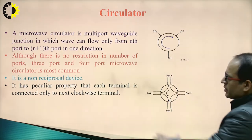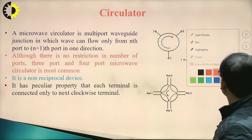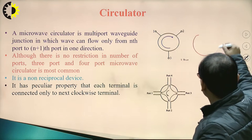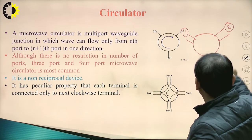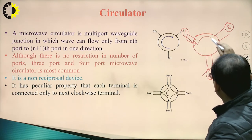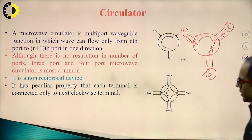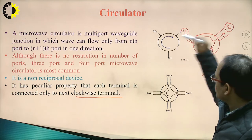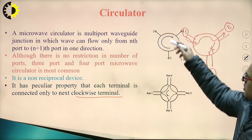A circulator has the peculiar property that each terminal is connected to only the next clockwise terminal. For example, in a three-port circulator with port 1, port 2, and port 3: if input is applied at port 1, output is obtained at port 2, and no output comes from port 3. Each terminal connects only to the next clockwise or anti-clockwise terminal depending on the internal circuit.